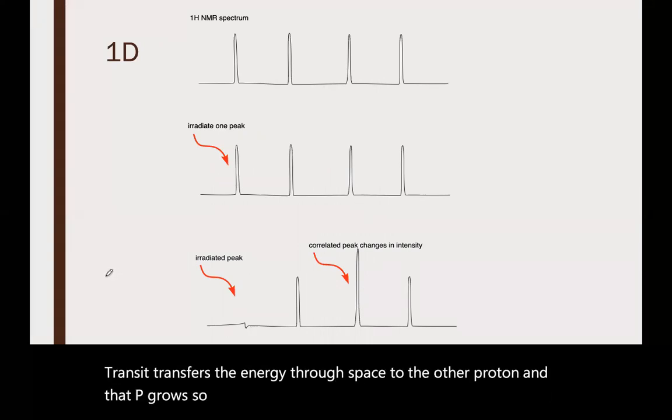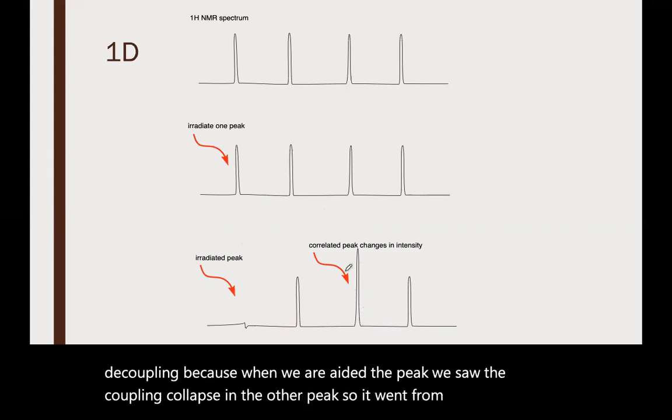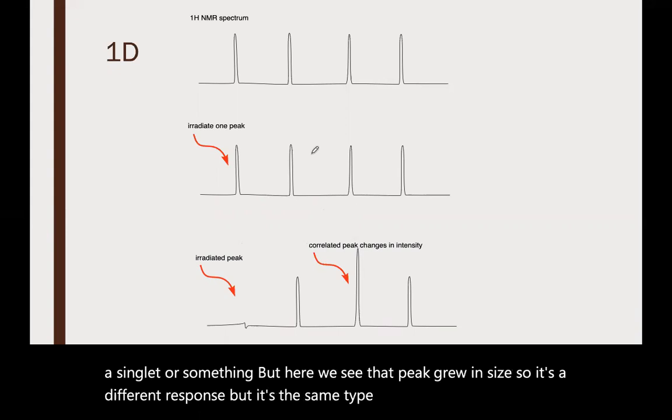This is different from 1D heteronuclear decoupling because when we irradiated the peak we saw the coupling collapse in the other peak, so it went from maybe a triplet to a singlet. But here we see that peak grew in size, so it's a different response but the same type of technique.